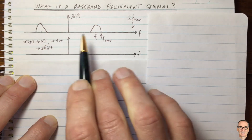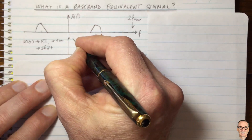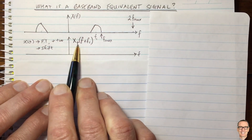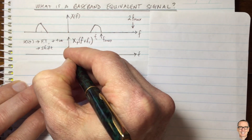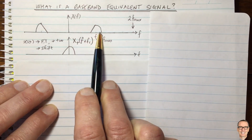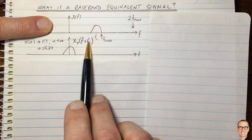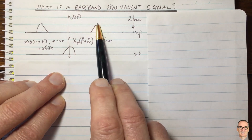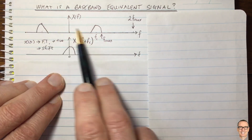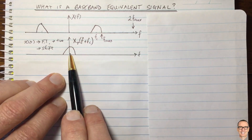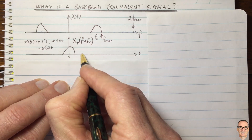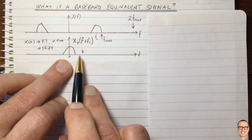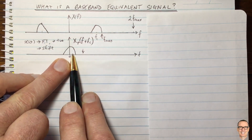We then shift that positive part to be centered around zero. The positive part is called X-positive, and we shift it by evaluating X-positive of F plus FC. That function preserves all the shape and all the information from the original signal. Now if we were to sample this shifted version, we would only need to sample at twice the bandwidth — a much lower rate than if we sampled the passband directly.